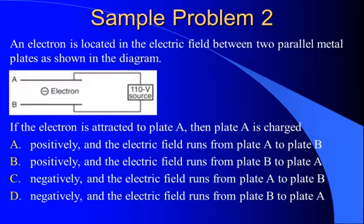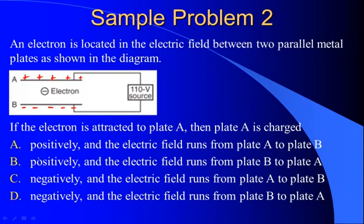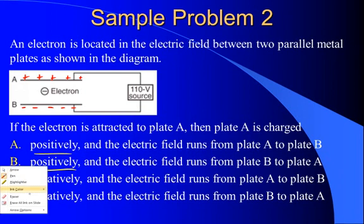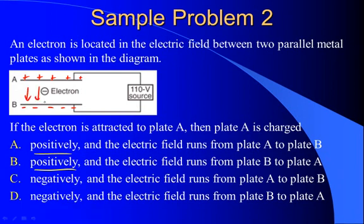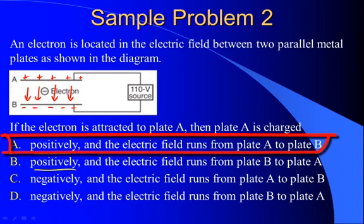Alright, let's check out another one. An electron is located in the electric field between two parallel metal plates as shown in the diagram. If the electron is attracted to plate A and plate A is charged, well, if it's attracted to A, A must be positive because opposites attract. Therefore, B must be negative. So, if the electron is attracted to plate A, the plate A must be positive. So, that leaves us with choice A or B. The electric field, you'll recall, runs from positive to negative. So, our electric field looks something like this. From A to B, positive to negative. Therefore, our answer must be number 1. Plate A is charged positively and the electric field runs from plate A to plate B.